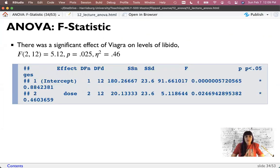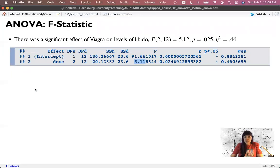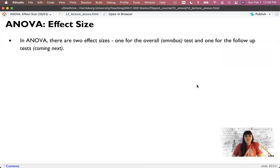Now, the F statistic, we would report as F, 2, and 12, 5.12, rounding, P equals 0.025. And I have it as eta squared here. We're about to talk about this. And this says, the label here is GES for generalized eta squared. Again, in between subjects design, generalized eta squared and eta squared are the same. So we can list it as eta here. And 0.46 is quite large. Love made-up data, right? Big effect.